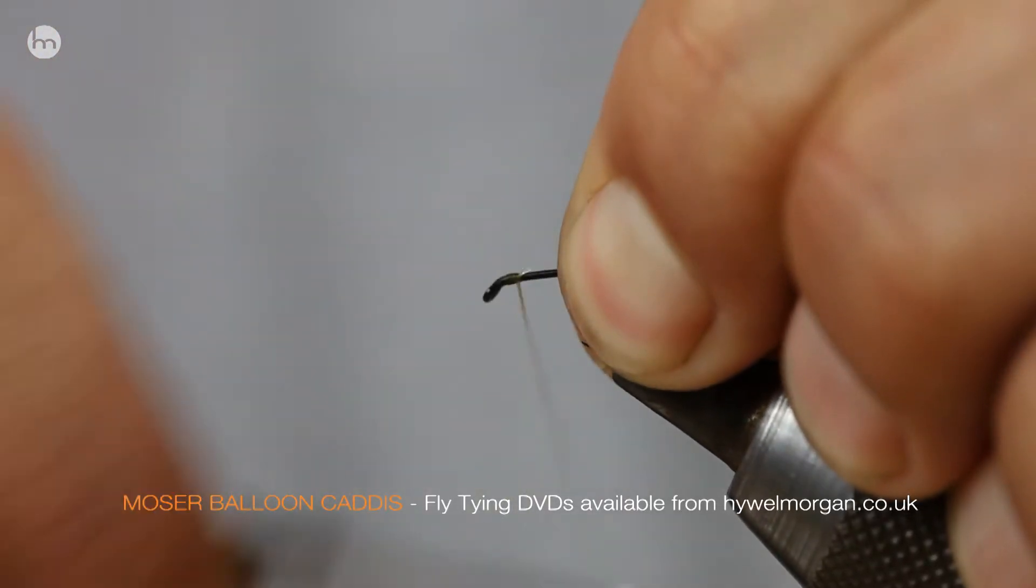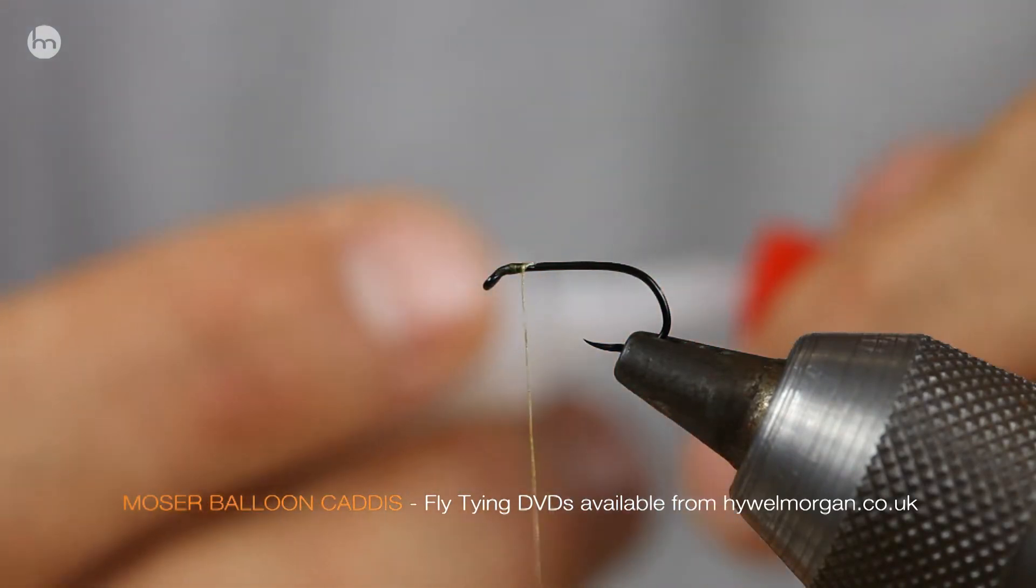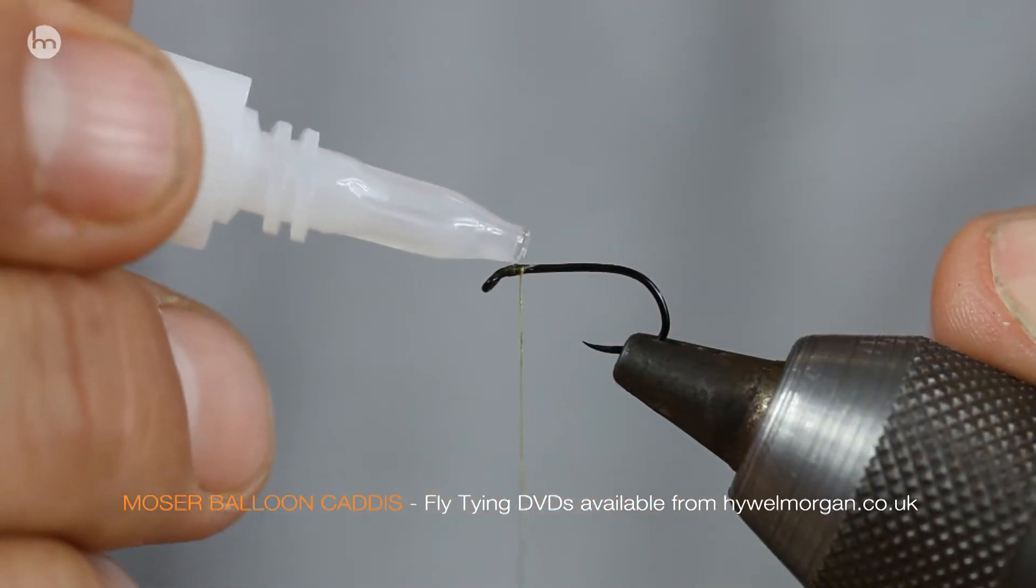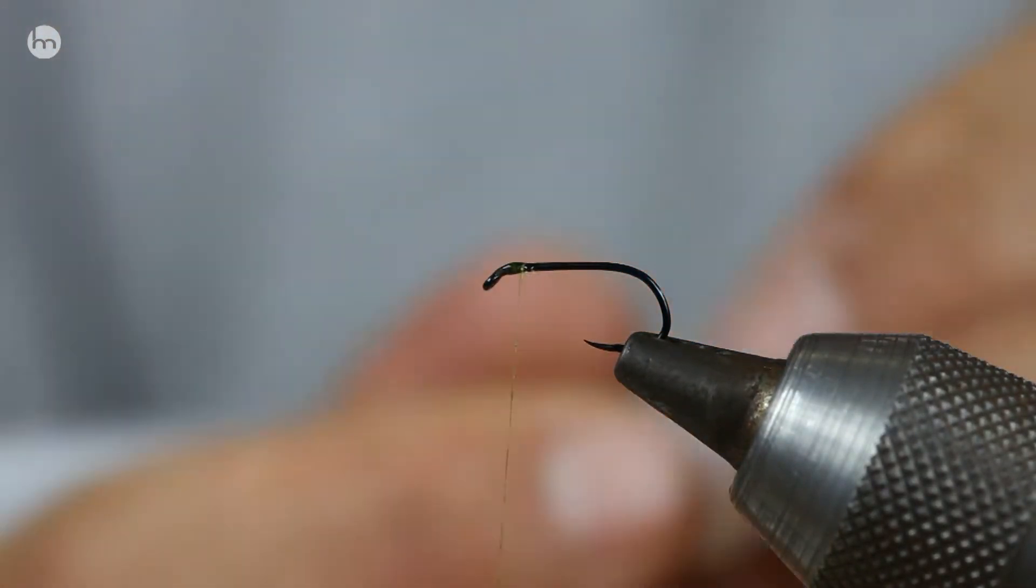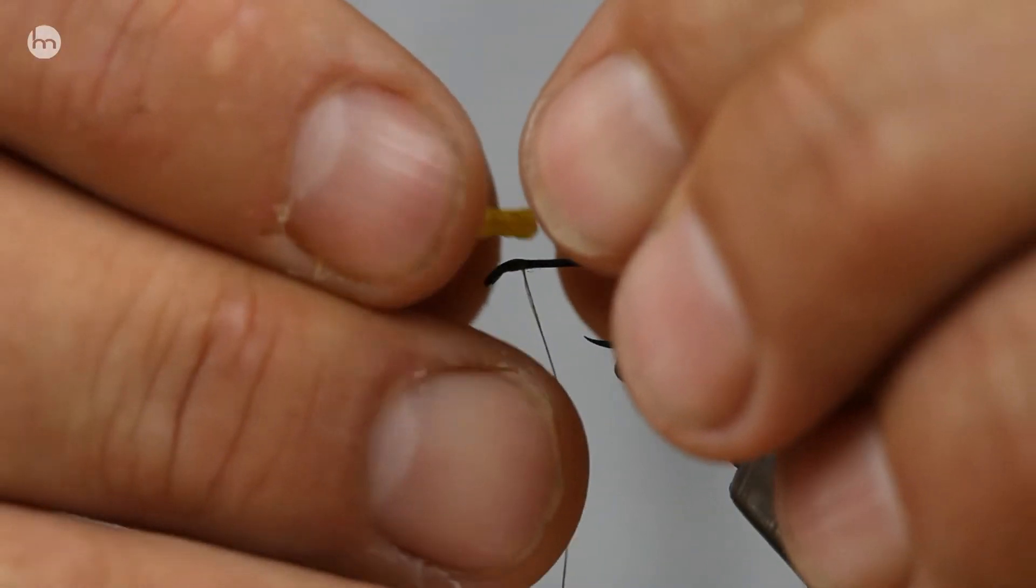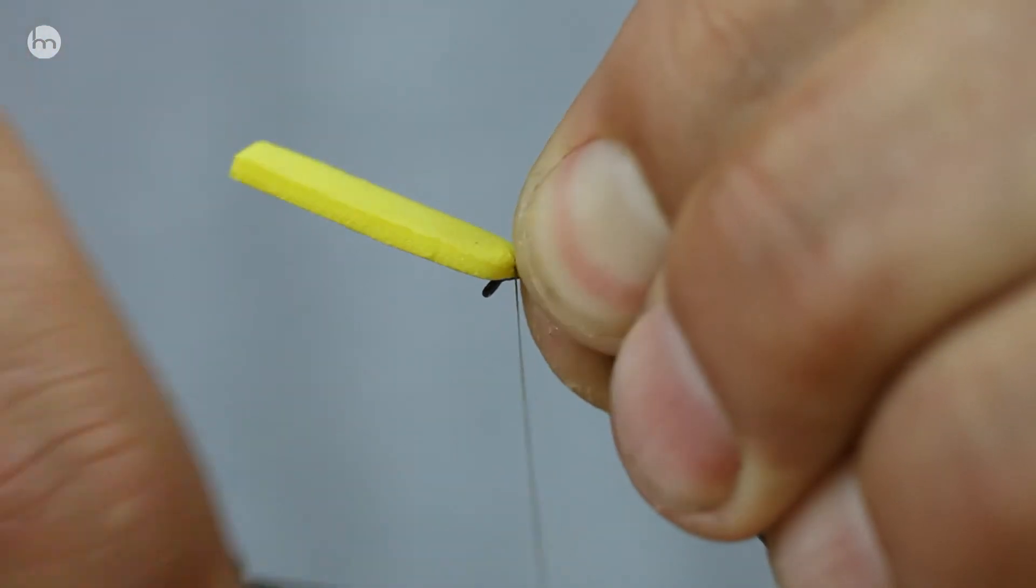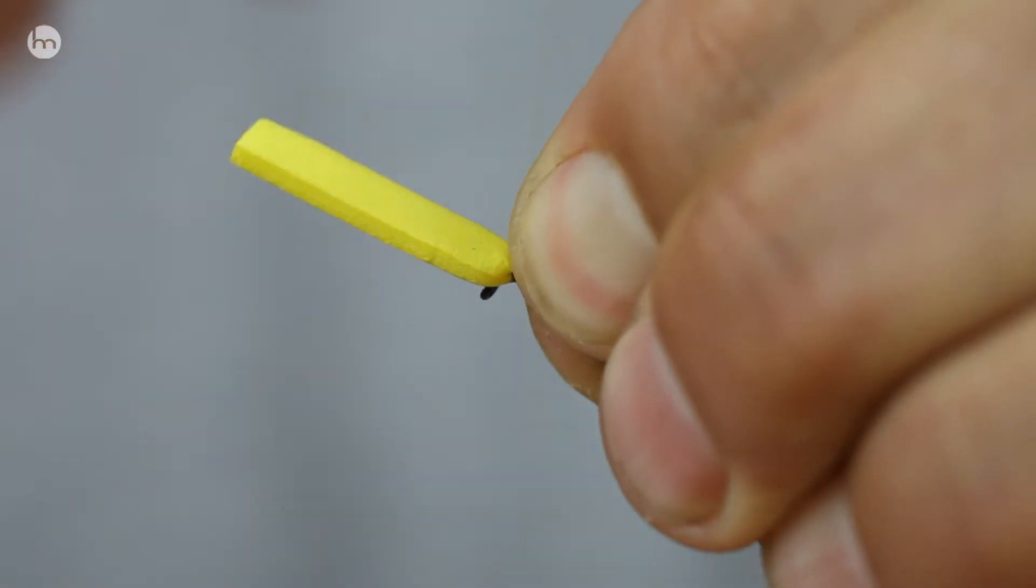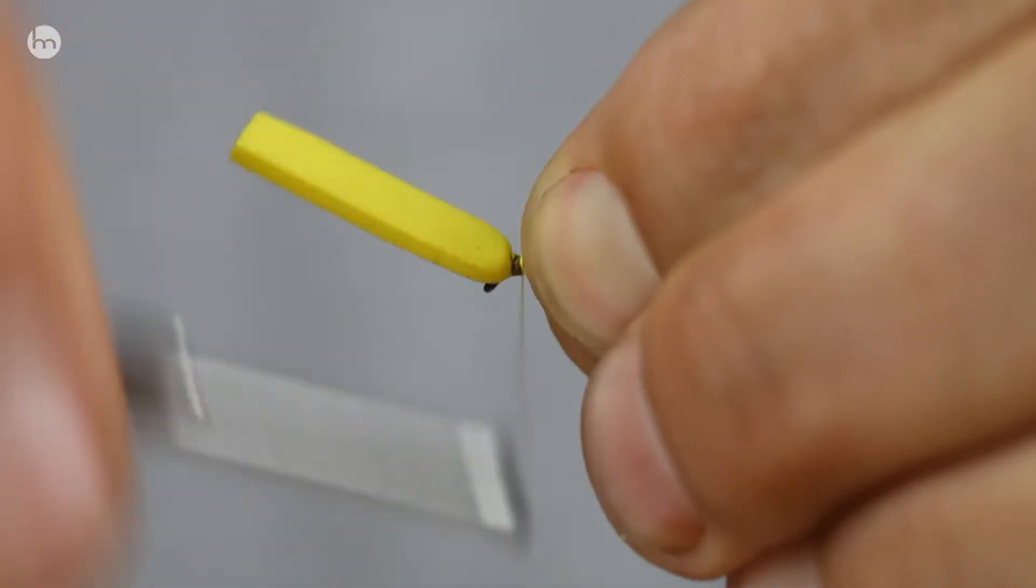Right, first of all get a nice bed of silk and then we're just going to use a little bit of super glue. This will help you to hold that flat foam in place. So watch your fingers. There we go.